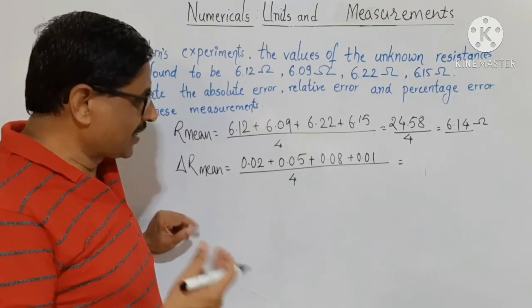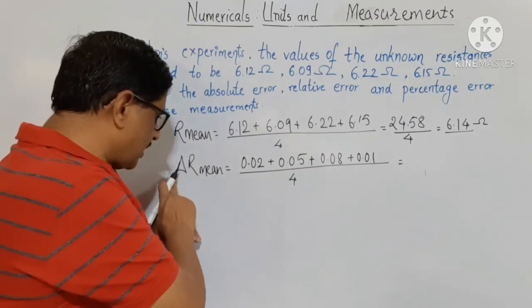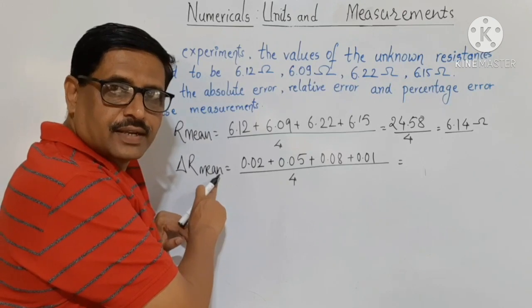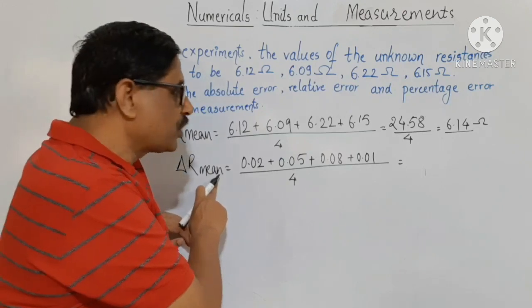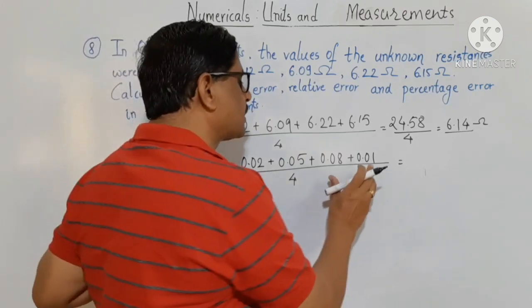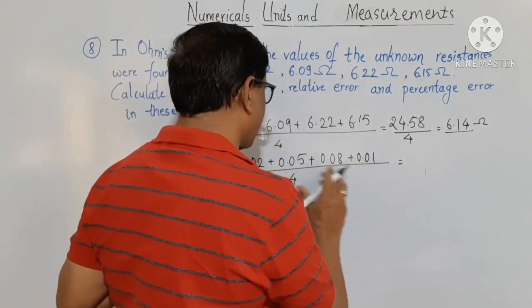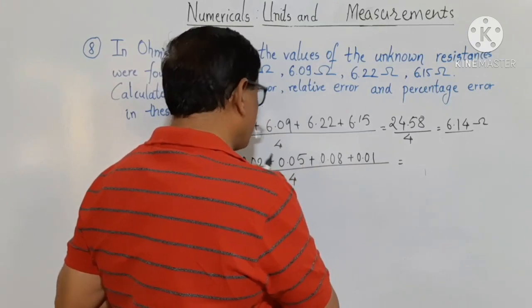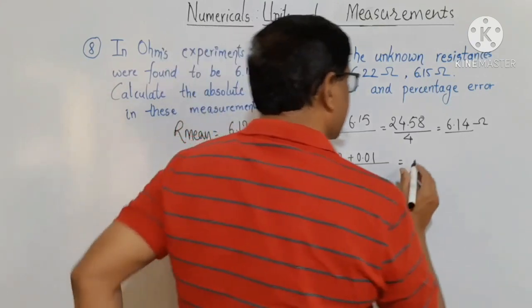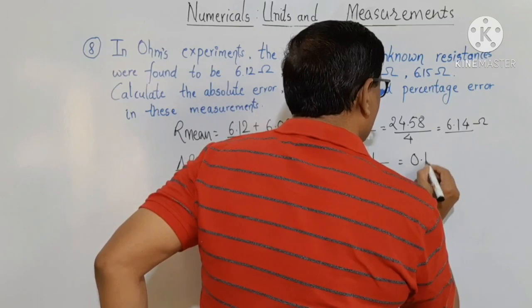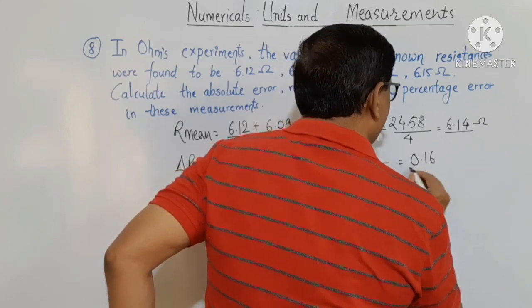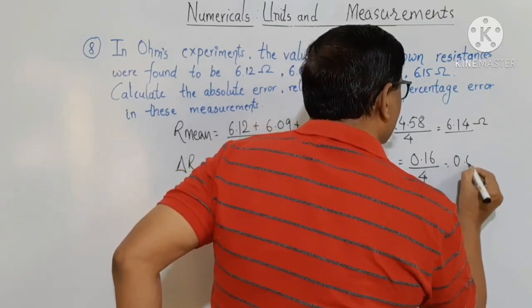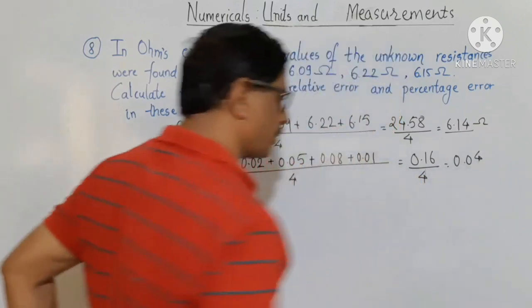The average absolute error is (0.02 + 0.05 + 0.08 + 0.01) divided by 4, which equals 0.16 divided by 4, coming out to be equal to 0.04 ohm.